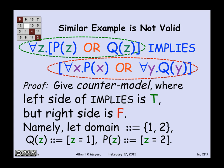On the other hand, is everything in the domain satisfying P? Is everything in the domain equal to two? No, one's not equal to two. What about is everything in the domain equal to one? Is it true that for all Y Q of Y holds? No, two is in the domain, and it's not equal to one. And so we have found exactly what we want in a counter model, which makes the left-hand side of the implies true and the right-hand side of the implies false.